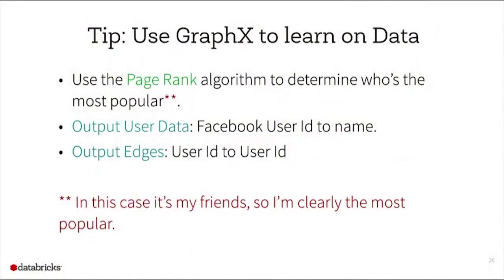I used GraphX to learn on the Facebook data. I ran the PageRank algorithm to determine the most popular person — though since it was my friends and friends-of-friends, I expected to win easily. To call GraphX, I needed two things: user data mapping Facebook user IDs to names, and edges representing friend relationships as user ID to user ID pairs.